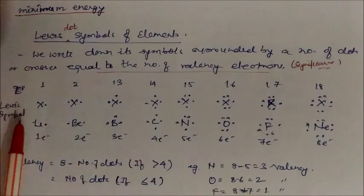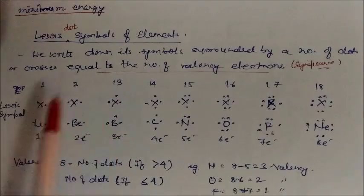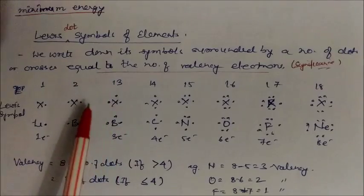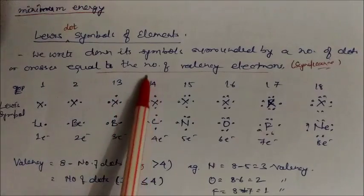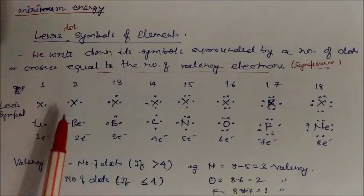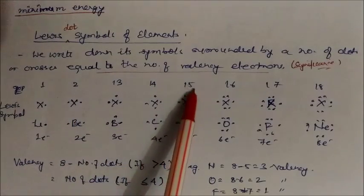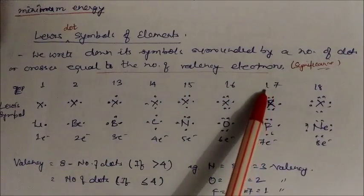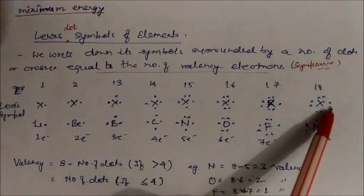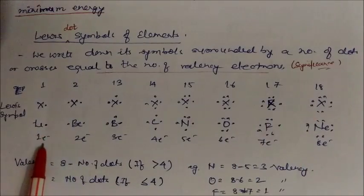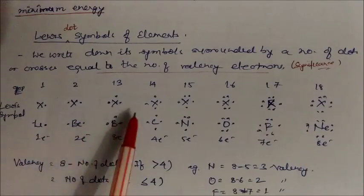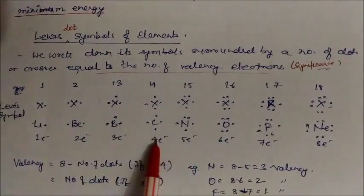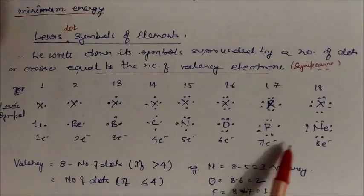Continuing with valence electrons by group: group 15 gives 5 valence electrons, group 16 gives 6, group 17 gives 7, and group 18 gives 8. So for lithium the valence electrons are 1, beryllium 2, boron 3, carbon 4, nitrogen 5, oxygen 6, fluorine 7, and noble gases 8.